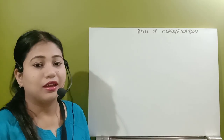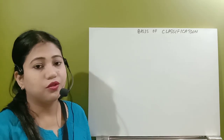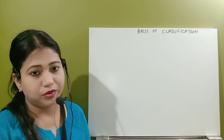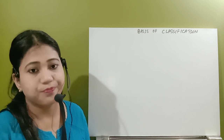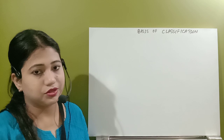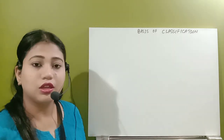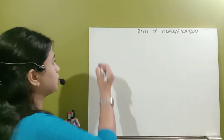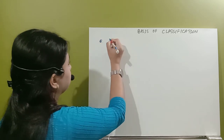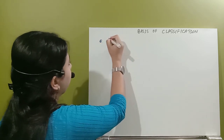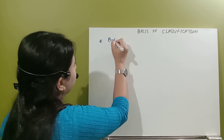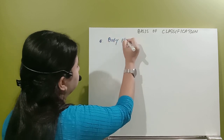Hello students. In the last video we discussed the coelom and the germ layer. Hope you understood that. Now let's start with another basis of classification. The fifth basis of classification is body plan.